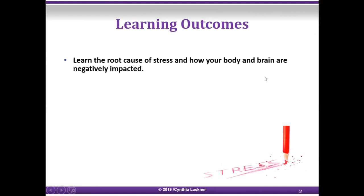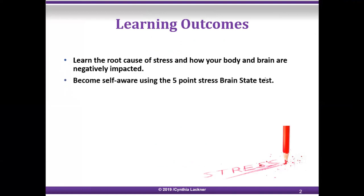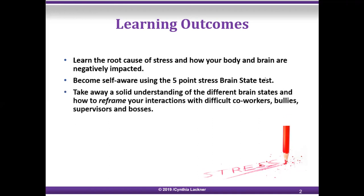So learning outcomes — in addition to the technology issues here: learn the root cause of stress and how your body and brain are negatively impacted. Become self-aware using the five-point stress brain state test that we're all going to take in a few minutes. Take away a solid understanding of the different brain states and how to reframe your interactions with difficult co-workers, bullies, supervisors, and bosses.